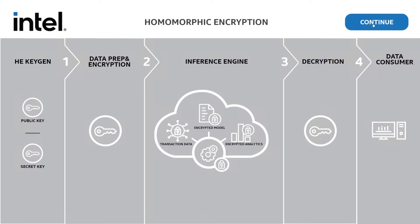Homomorphic encryption, also known as HE, is an advanced type of cryptography that enables computations on encrypted data without the need for decryption. This advanced technology preserves data privacy and confidentiality throughout the entire process.